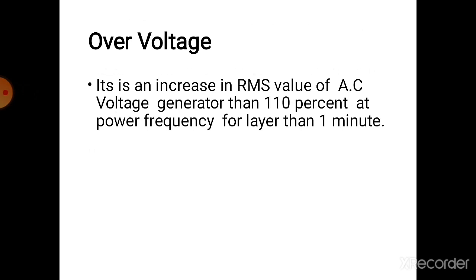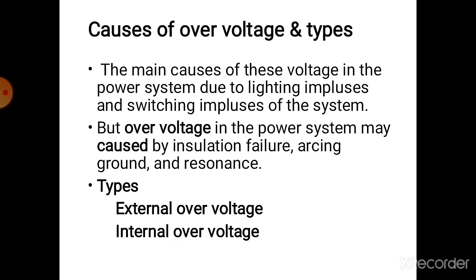The main causes of overvoltage in a power system are due to lightning impulse and switching impulse of the system. Overvoltage in a power system may also be caused by insulation failure, arcing ground, and resonance. The types of overvoltages are external overvoltage and internal overvoltage.